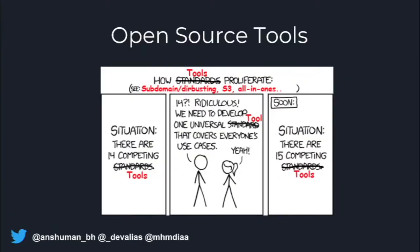This XKCD comic represents the state of open source tools pretty well. Basically, there are 14 tools out there, then somebody wants to improve on one or add a new feature, and they end up writing a 15th tool. This really is the state of open source right now — so many tools trying to solve the same problem.